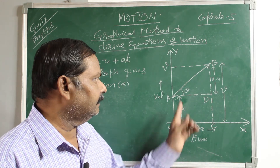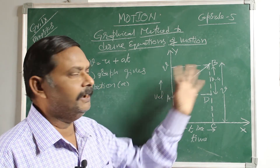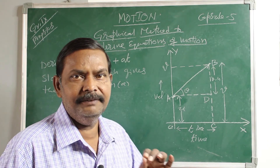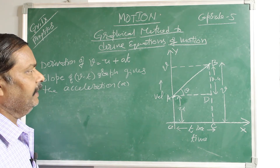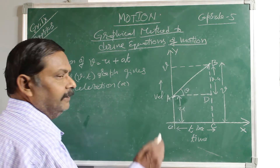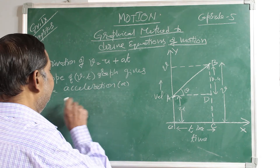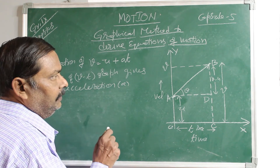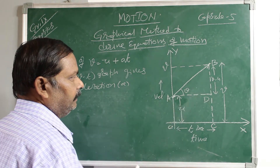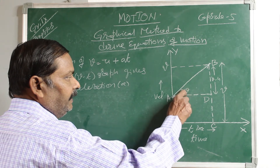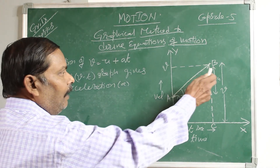The angle theta is the angle of elevation of the graph. The important principle here is the slope of the VT graph. The slope of the VT graph gives the acceleration. The formula for the slope of the VT graph is opposite side divided by adjacent side. Theta is the angle of elevation, and it's opposite by adjacent.